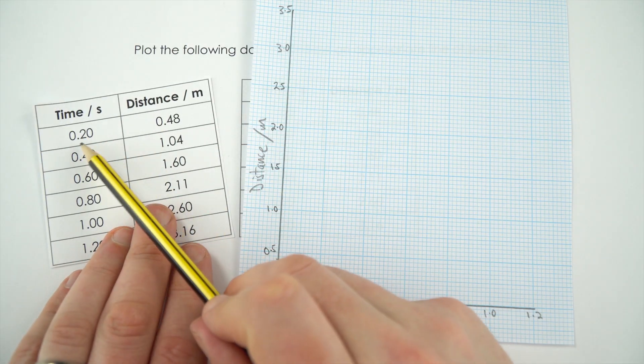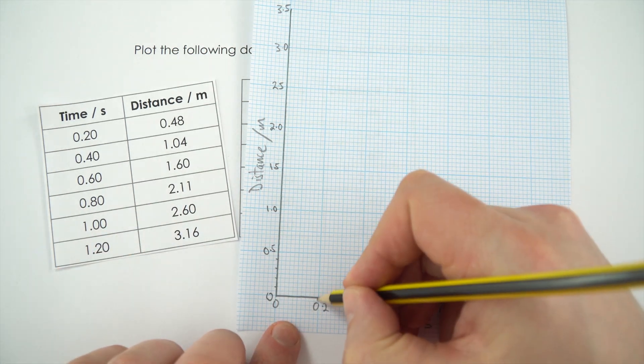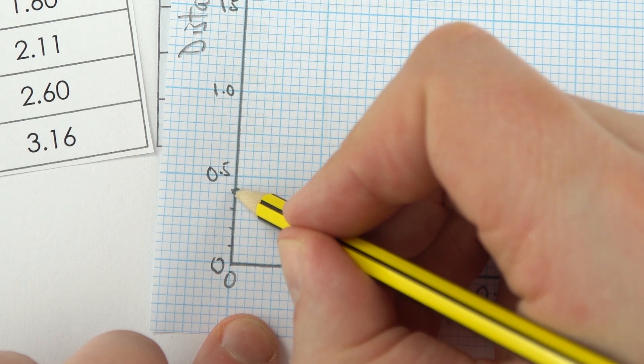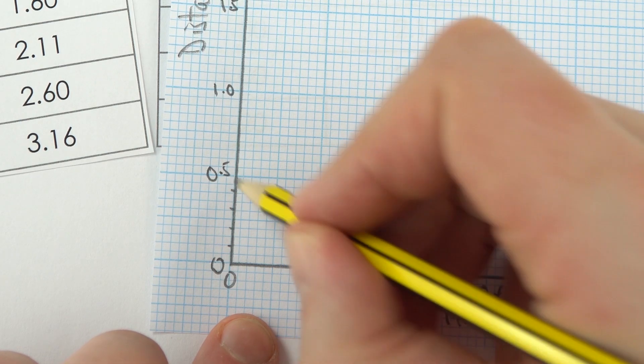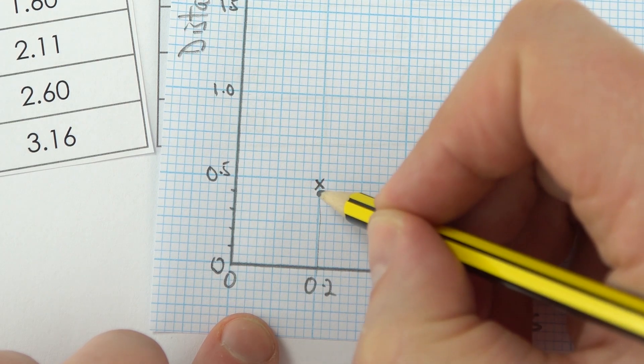The first bit of data is 0.2, 0.48, so it's going to be 0.20, which is on this line here going up, and this point here is 0.4, that's 0.5, so 0.48 is going to be somewhere nearer to the 0.5. I'm just using a small cross to mark that.